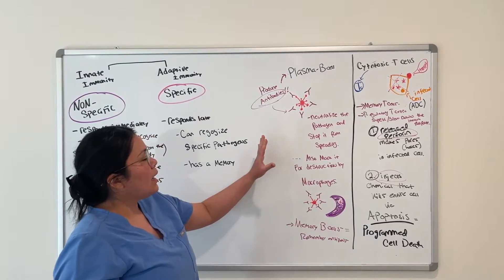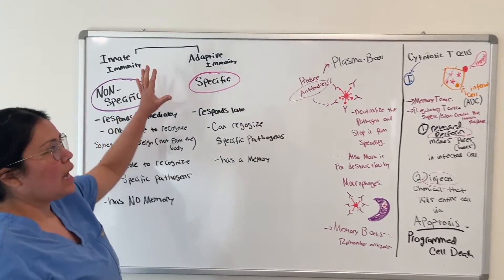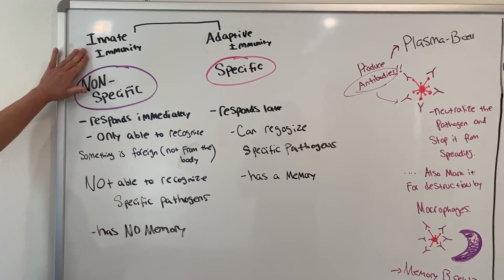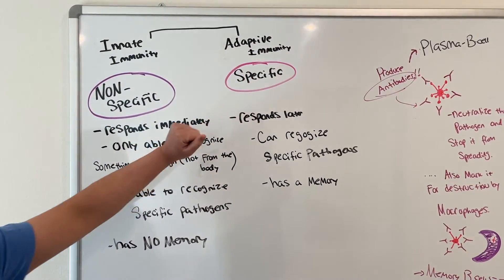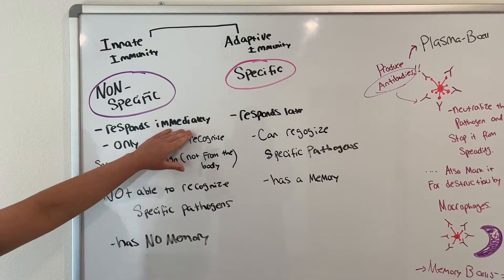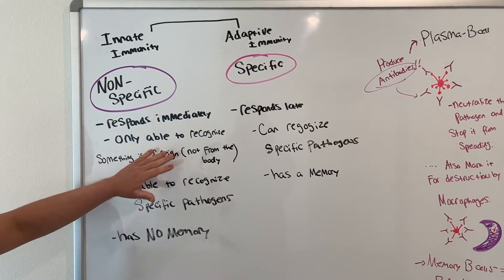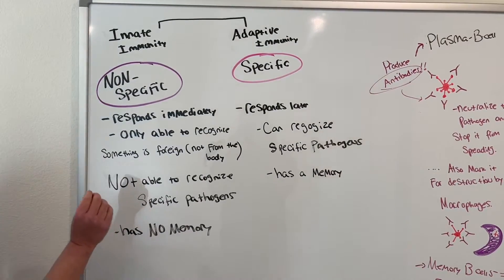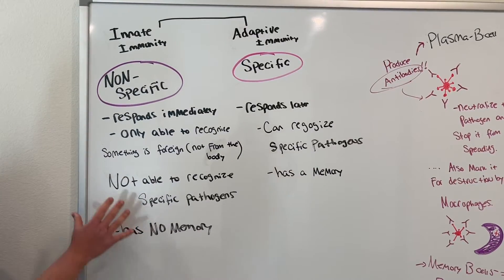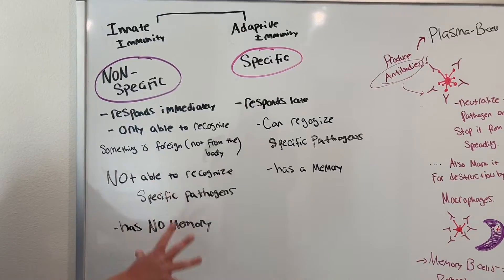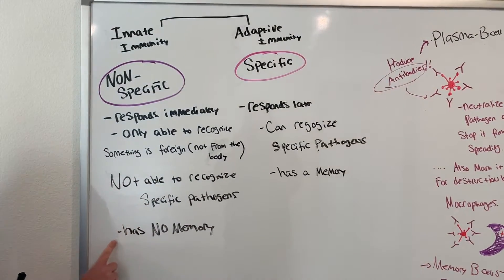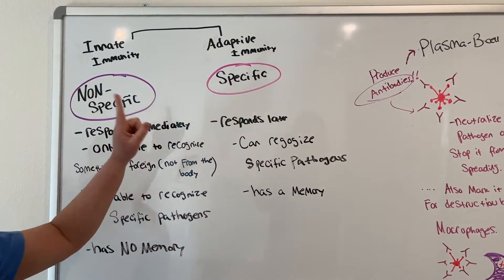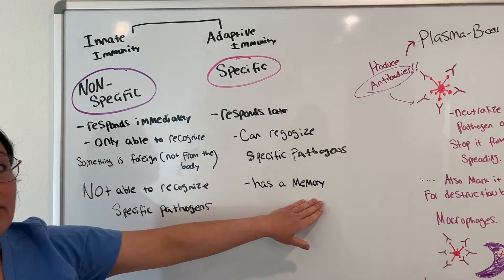Let's learn about the types of immunity. We have innate immunity versus adaptive immunity. Innate immunity responds immediately, but it's only able to recognize that something is foreign — it's not able to recognize specific invaders, so it responds to all pathogens in a general, generic way, and it has no memory. Adaptive immunity — in other words, specific immunity — can recognize specific pathogens, and it does have memory.